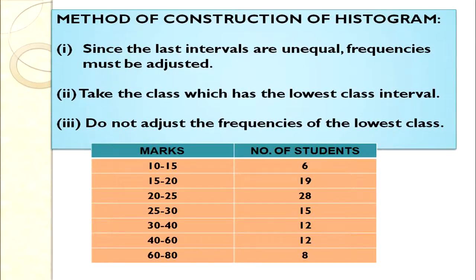Since the last class intervals are unequal, frequencies must be adjusted. We are not going to adjust the class marks — only the frequencies, and only for those classes whose intervals are not the same as the minimum. First, identify the class with the lowest class interval gap — that is 5. Do not adjust the frequencies of the lowest class; they remain the same and will be plotted as-is.